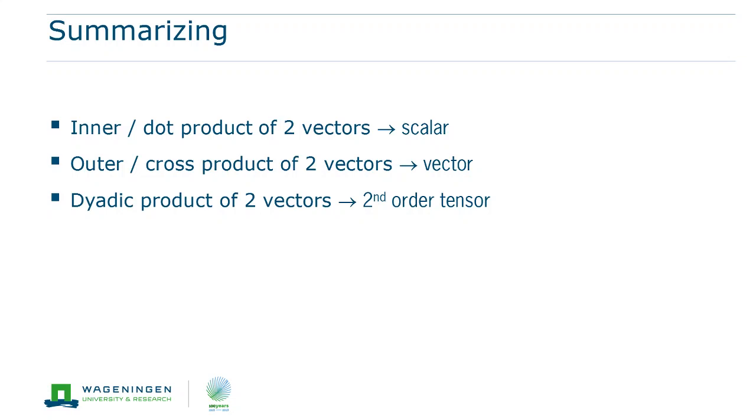The outer product of two vectors is indicated with a cross, and it yields a vector. Therefore, it has two alternative names, the cross product and the vector product.